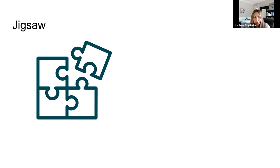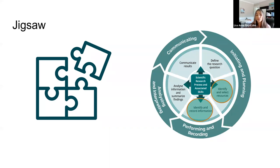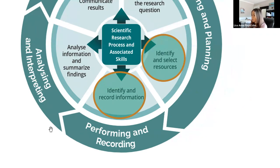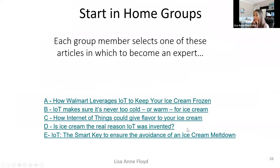We're using the jigsaw activity to work through identifying and selecting sources — I provide the resources — and recording key information. I'd show students five key articles I've found, and they choose which to focus on, which determines their expert group. I'd have them take a quick glance at all articles so they can make an informed decision.